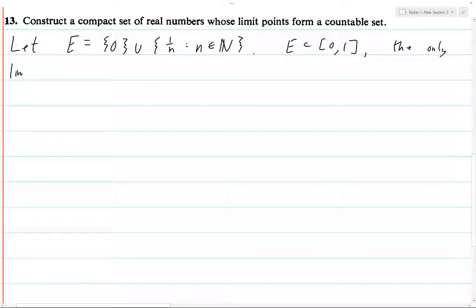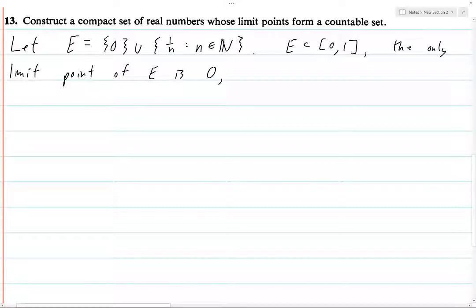The only limit point of E is 0. In order to have a limit point, every neighborhood of the point needs to have another element — not that point itself — which is in that neighborhood. So a singleton point like 1 is not a limit point, because if you take a neighborhood of radius 1/4 around it, that won't contain any more elements of the set. So it's an isolated point.